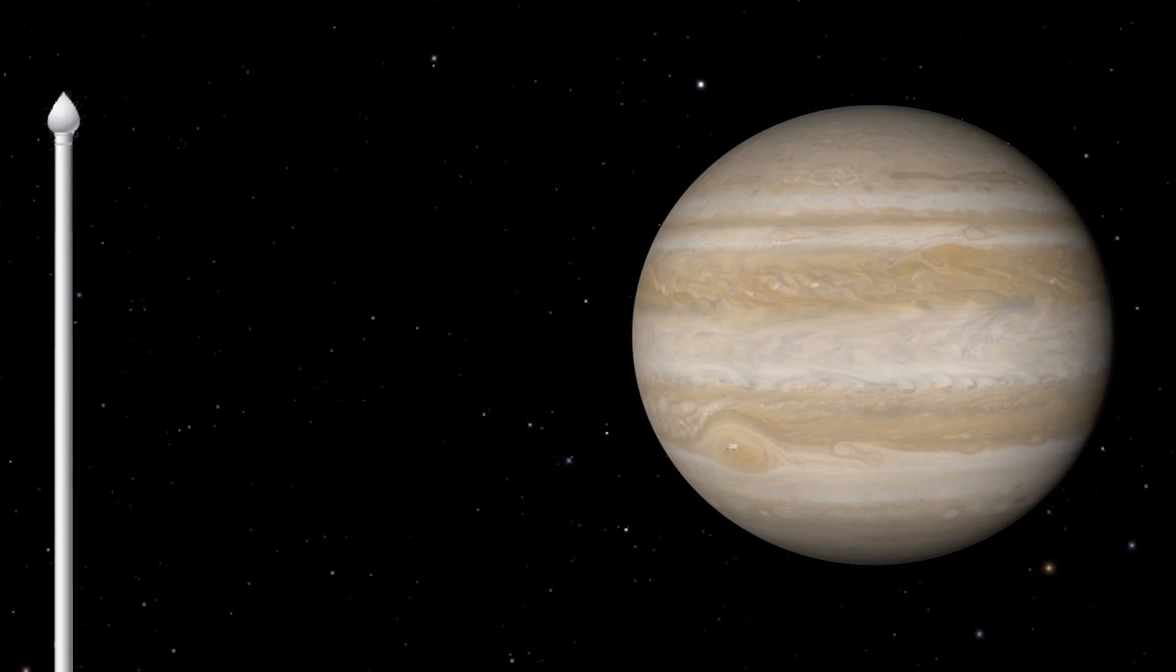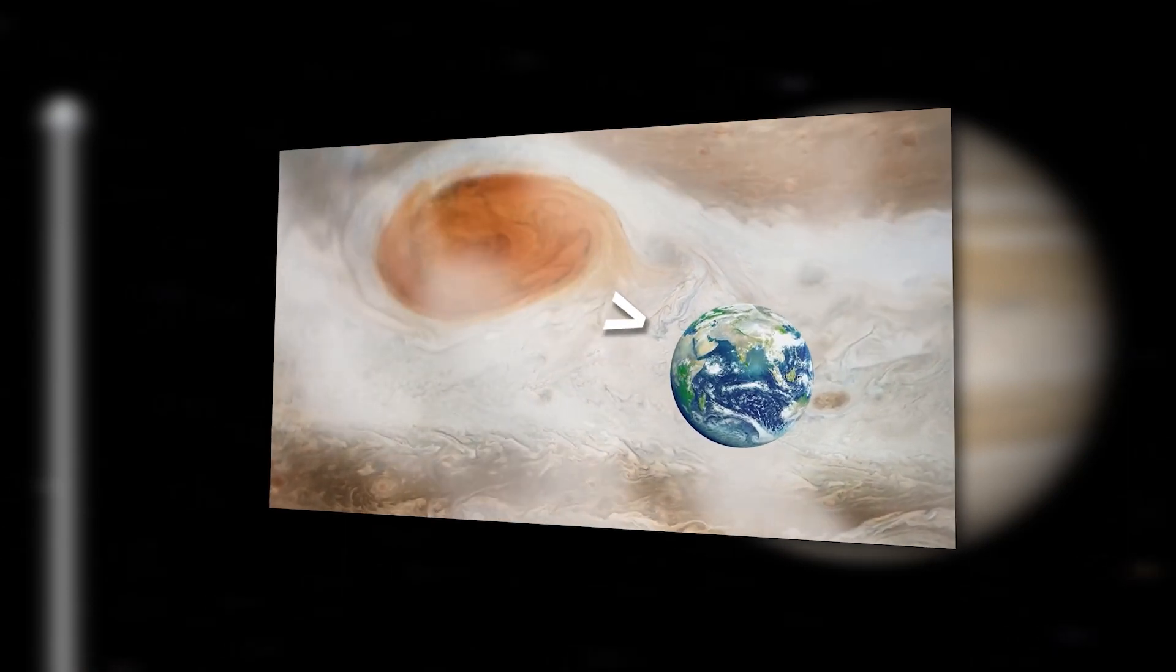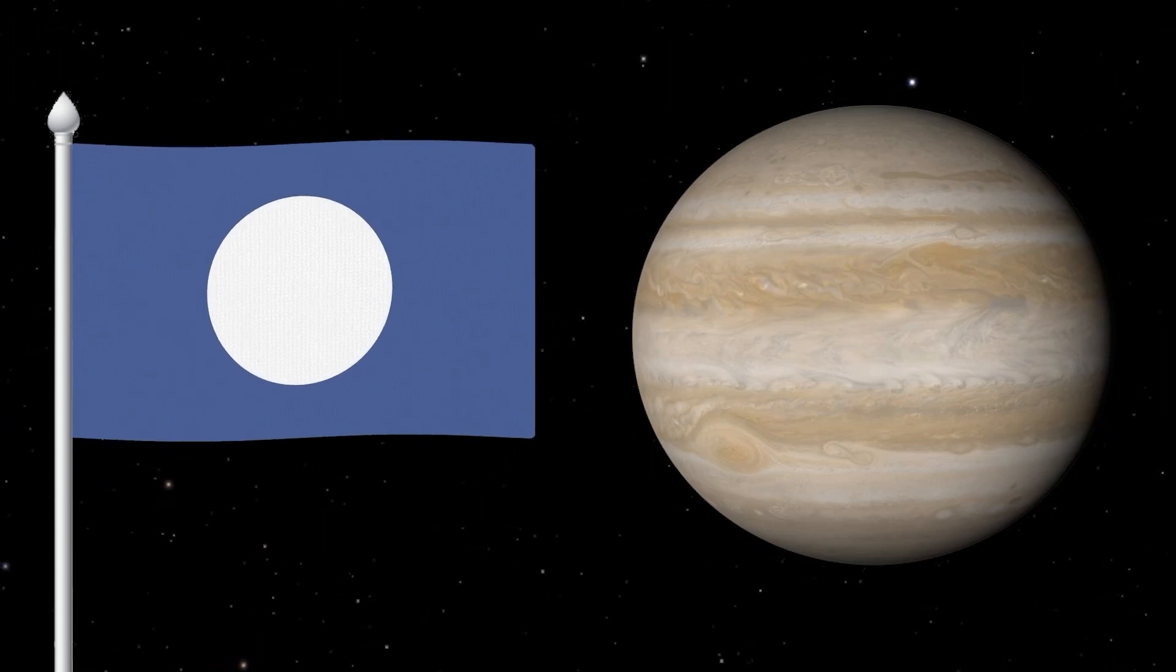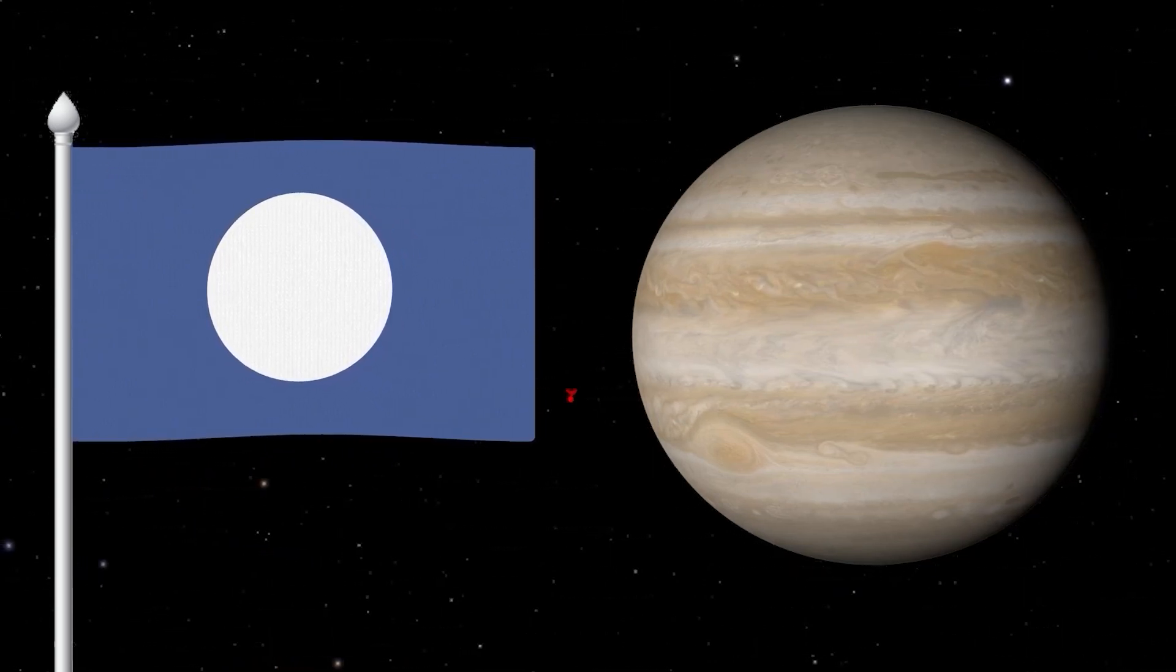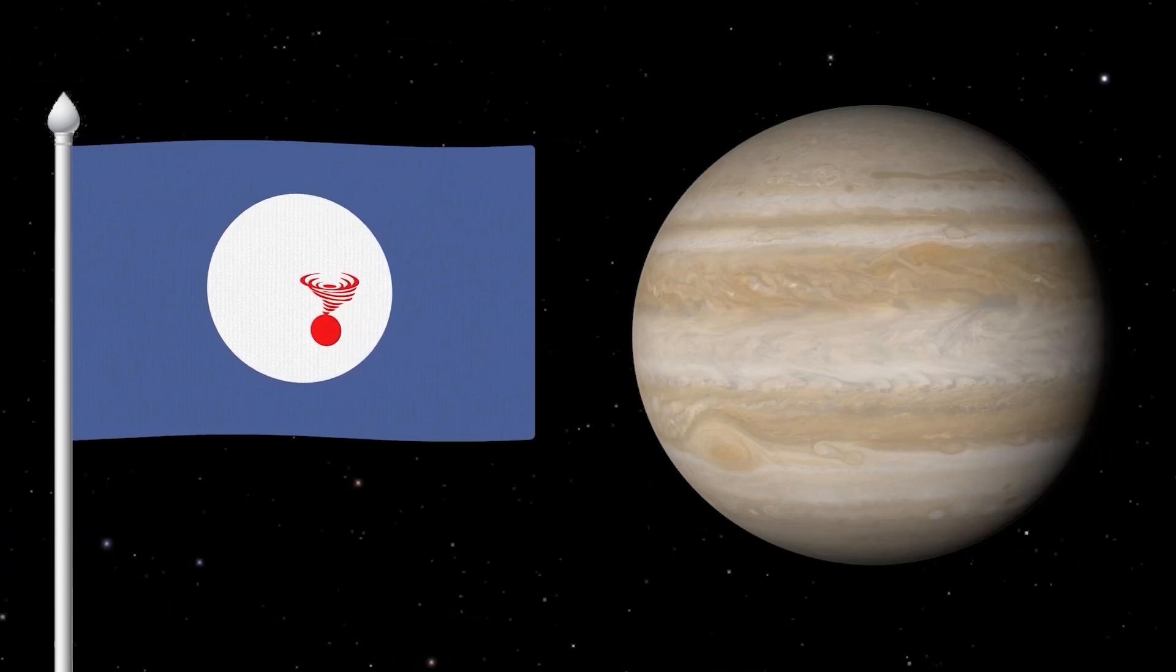The big red spot, a powerful storm larger than the Earth has been raging on the surface of Jupiter for at least 350 years. The background will be blue and in the center of the flag will put a white circle representing Jupiter with a red circle and the storm sign. We managed to make quite a realistic flag for Jupiter.